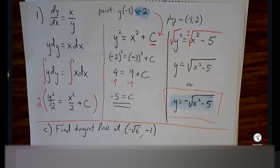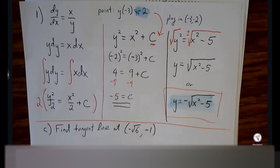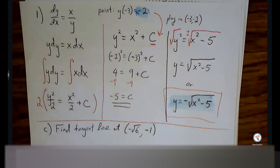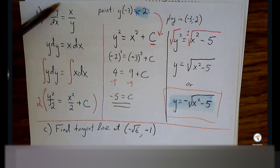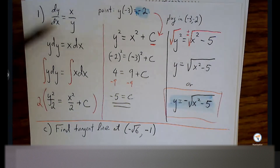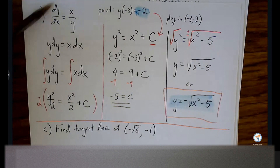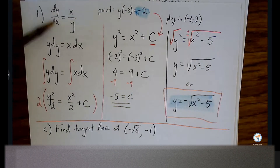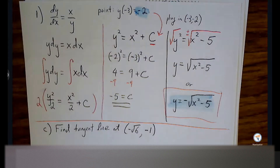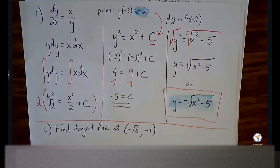For part C: what information do we need to find the tangent line equation? Point and slope. We have the point. To access the slope, plug the point into the original derivative equation. The differential equation is your slope formula — it is your derivative equation. Whatever they define the derivative to be, you're just going to plug in and access that value from there.